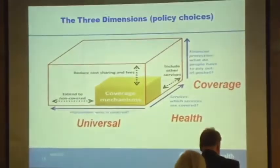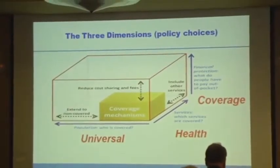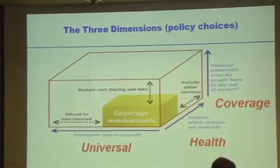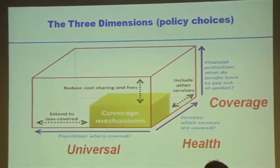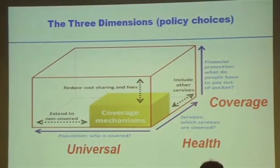I'm starting the part on choosing services — that is one part of the Cube. I want to point out why we say universal health coverage. Every word of that means something. This is universal, this is health, and this is what has been talked about in terms of coverage. It's all three. And so we are now going to look at these services — which services are covered.